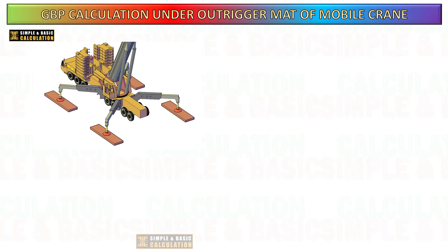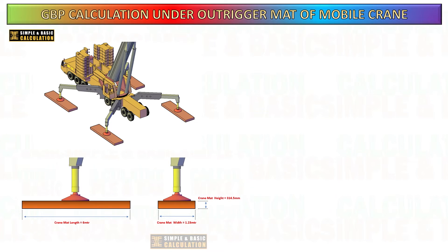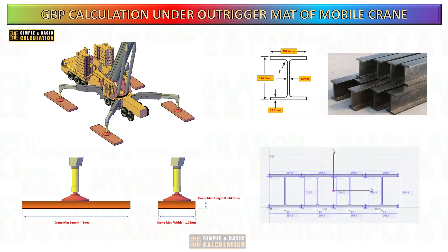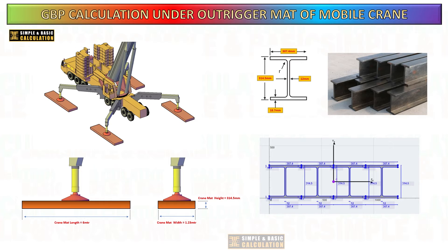For this example, the crane mats we want to utilize are constructed from steel I-beams. The I-beams are connected in parallel to create a platform with a total length as shown in the sketch. The dimensions of the I-beam we plan to use for our computation are as follows.